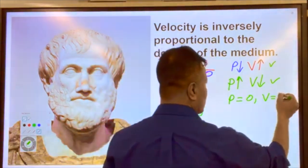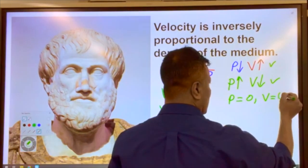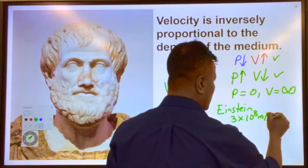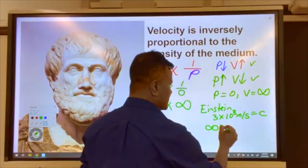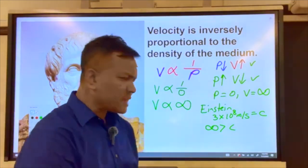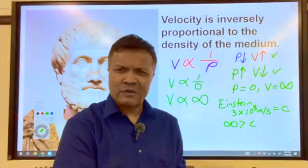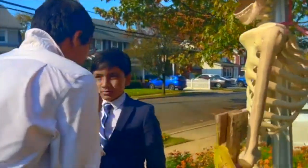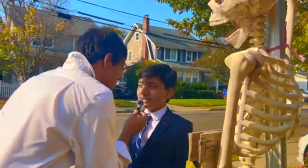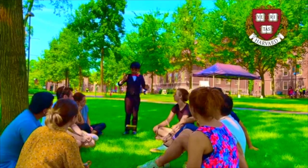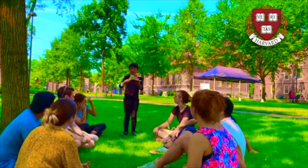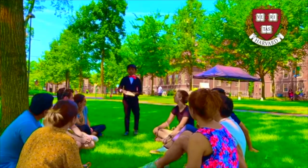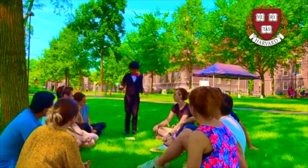If density is zero then velocity is infinity. But Einstein said nothing can move faster than the speed of light — 3×10⁸ meters per second, equal to c. But infinity is bigger than c, so that contradicts Einstein's laws. We must reject Aristotle's hypothesis. There was a vacuum for the paper but not for the book — let's watch it again.